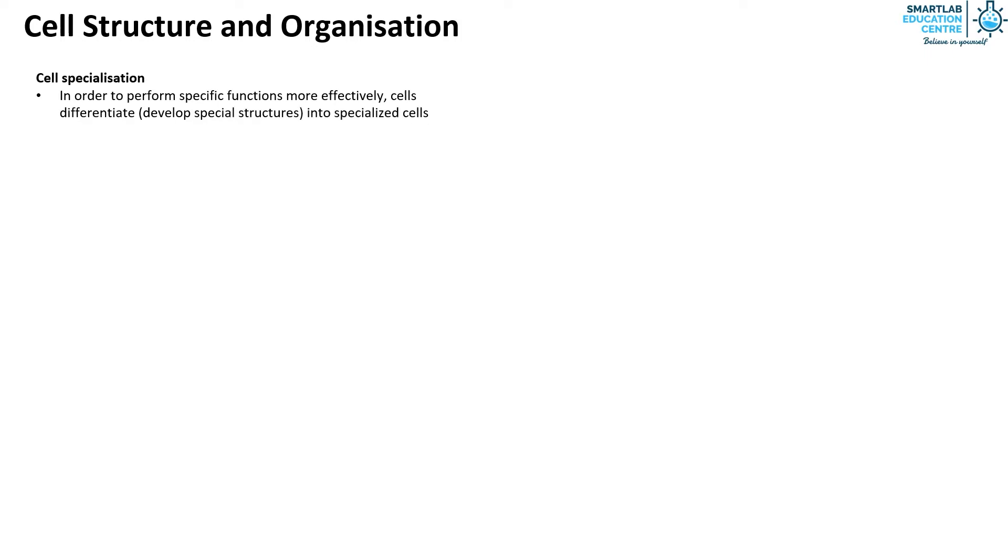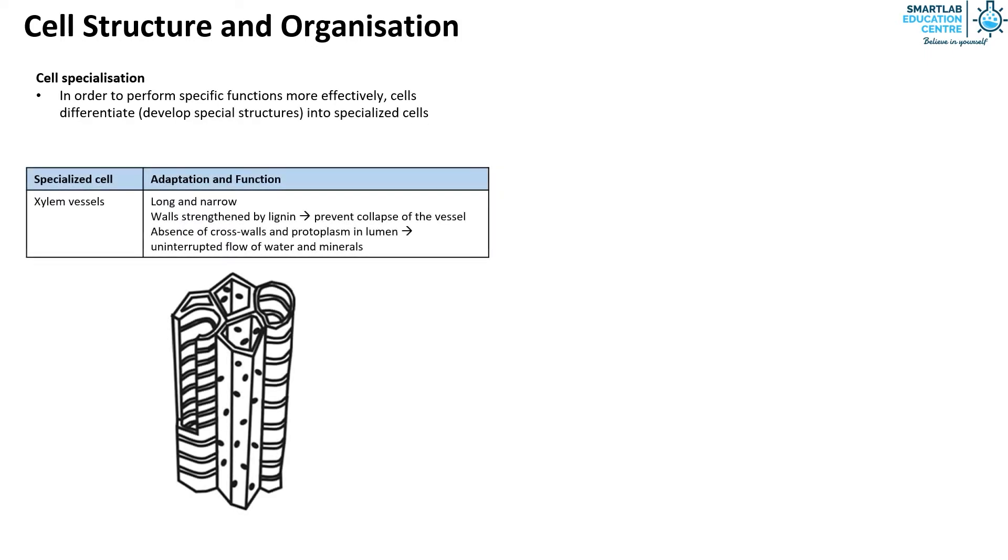The first specialized cell is the xylem vessels. They are long and narrow. Their walls are strengthened by lignin that prevents the collapse of the vessel. They don't have any cross walls and protoplasm in their lumen such that there is uninterrupted flow of water and minerals.